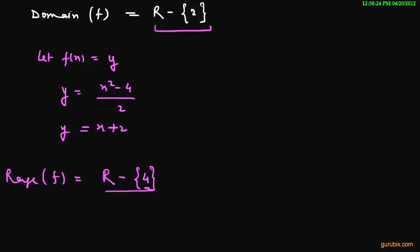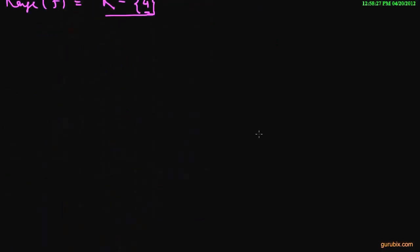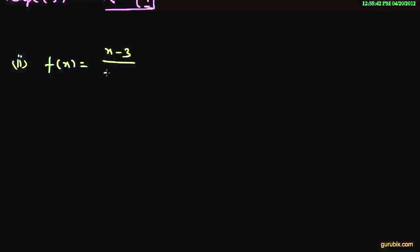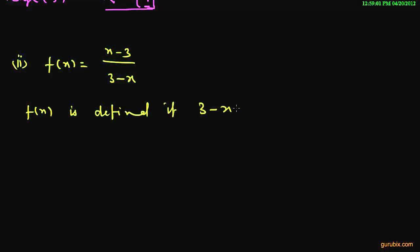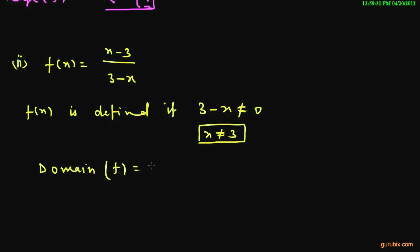Now we shall move to the second part of the question. In part 2, we are given a function f(x) equals x minus 3 over 3 minus x. We know the function f(x) is defined if 3 minus x is not equal to 0, which means x is not equal to 3. So the domain of the function f is the set of real numbers except 3.